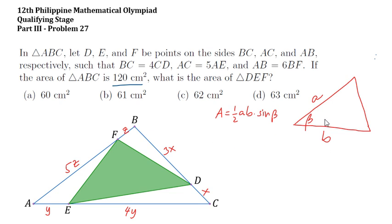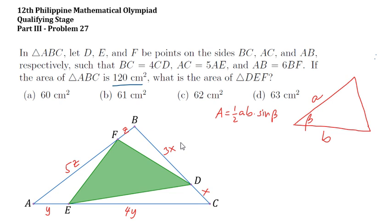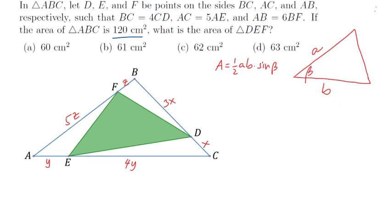We will apply this formula to the figure later on. But first, we note that the area of triangle DEF is equal to the area of triangle ABC minus the area of triangle FAE minus the area of triangle FBD minus the area of triangle DCE.